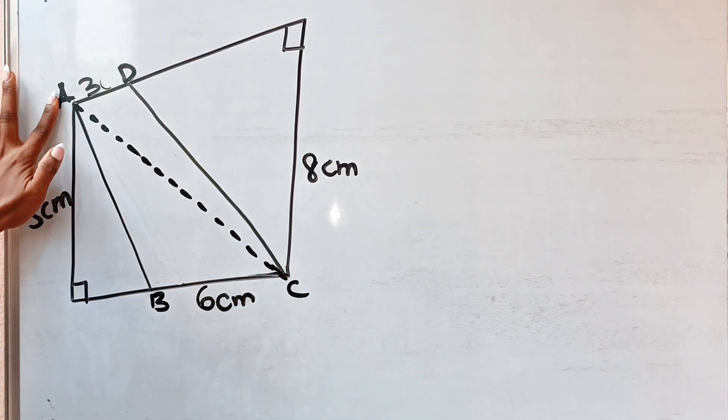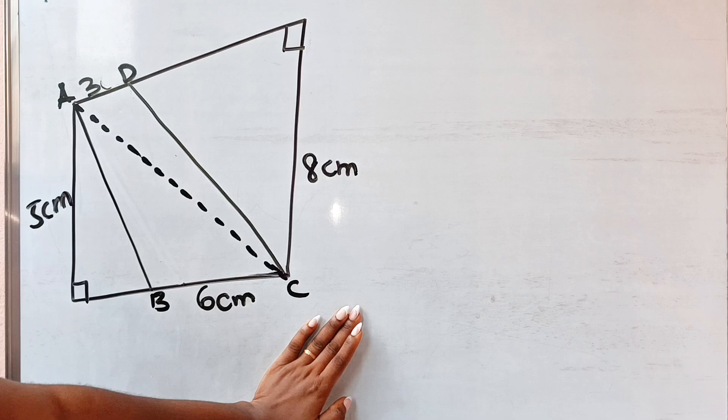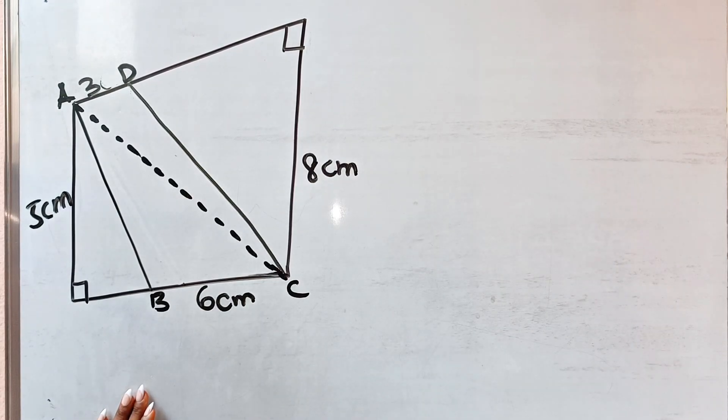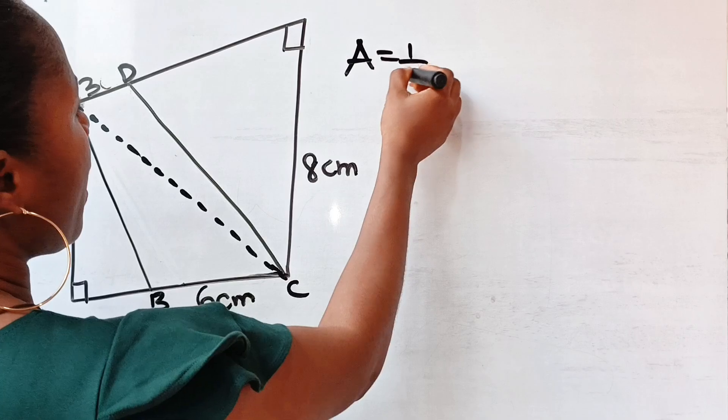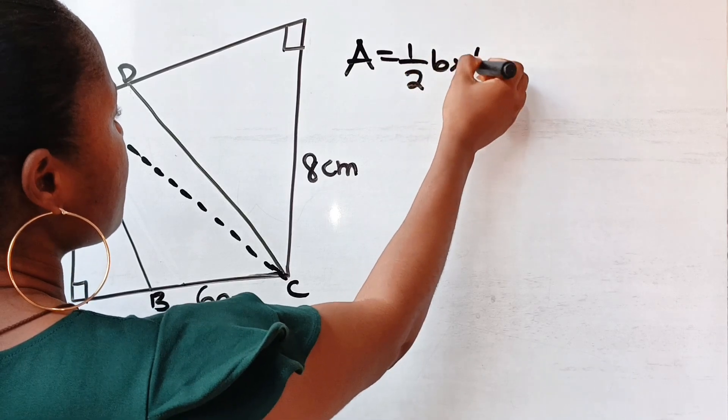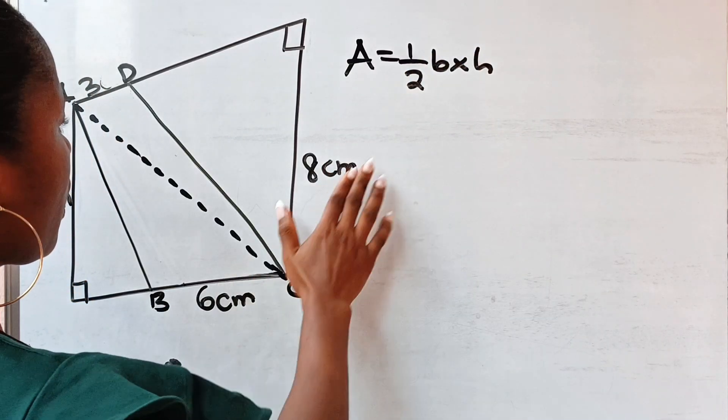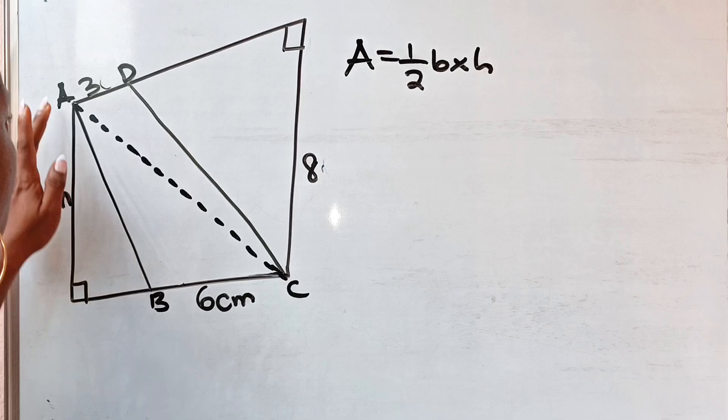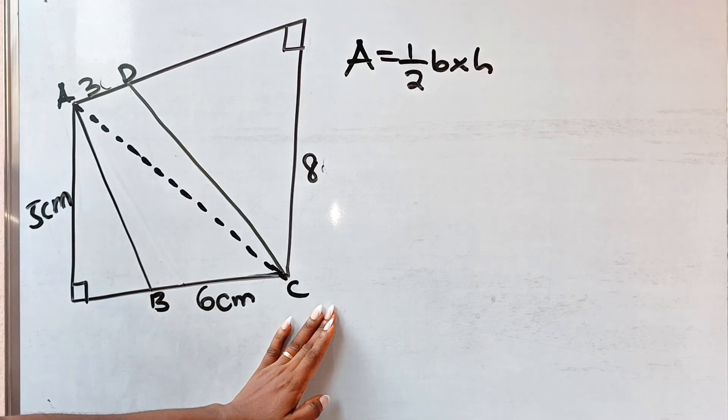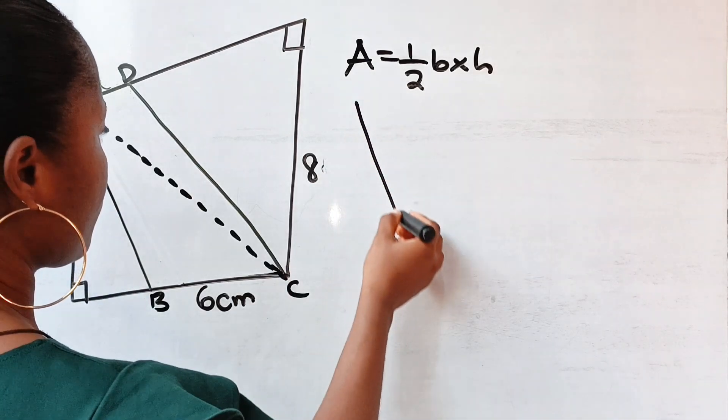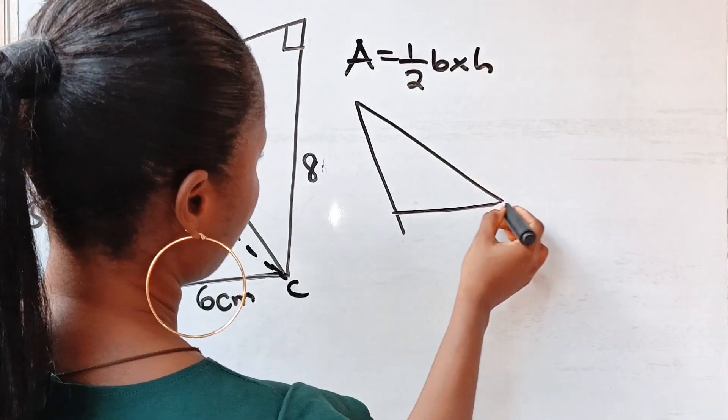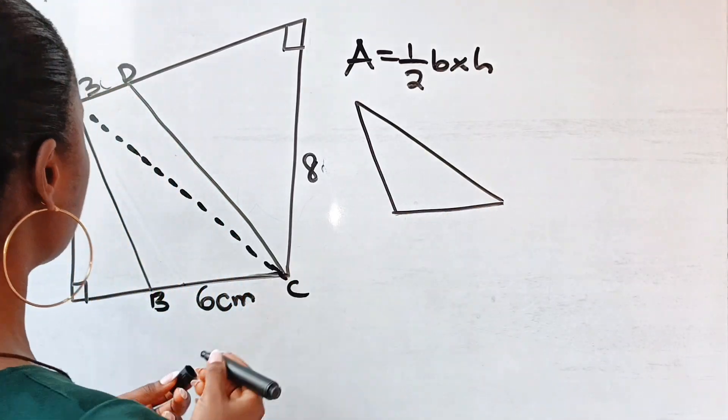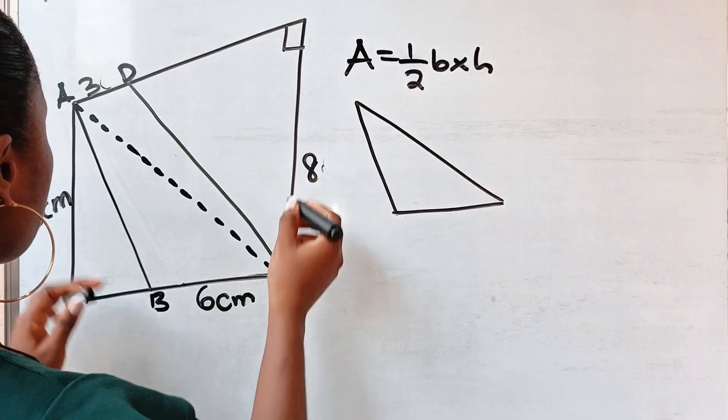Now let's start with triangle ABC. First of all, area is equal to half base times height. So for triangle ABC, we need the height.